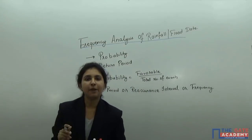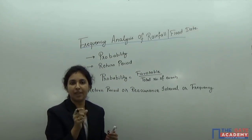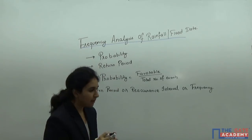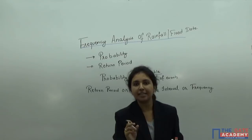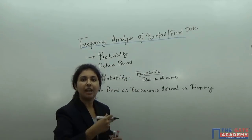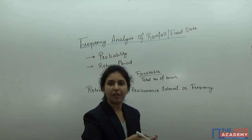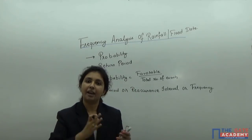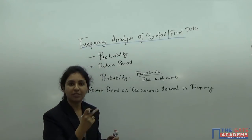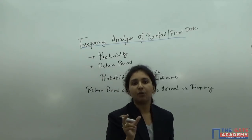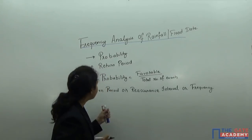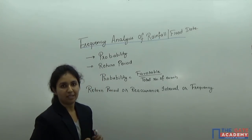Return period means: after how many years will the same event occur again? Suppose 16 cm of rain occurred this year — after how many years will this same rainfall occur? Either after 1 year, 2 years, or 10 years. So return period or reoccurrence interval is the time period between two events. That is called return period, reoccurrence interval, or frequency.